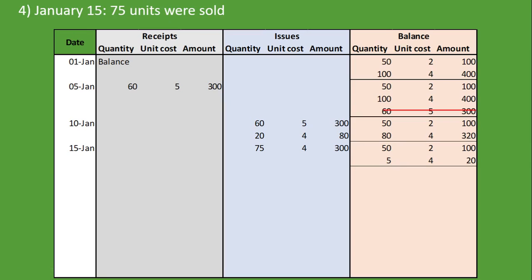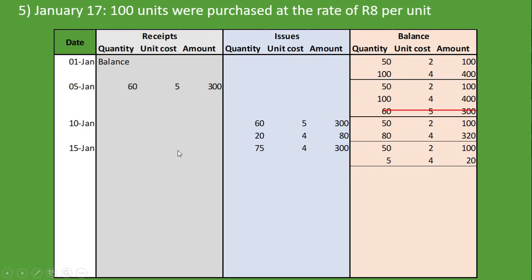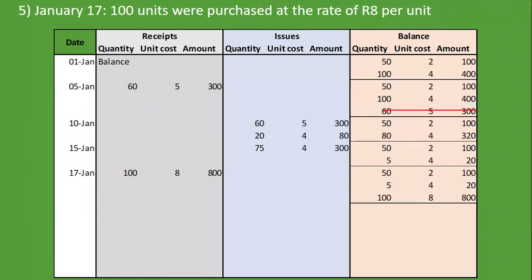The fifth transaction: on January 17th, 100 units were purchased at 8RN per unit. Since inventory is coming in, we put it under receipts: 100 units at 8RN per unit equals 800RN. Under balances we record all inventory now in stock: 50 units at 2RN per unit, 5 units at 4RN per unit, and the newly purchased 100 units at 8RN per unit.